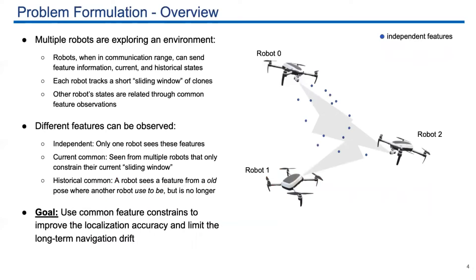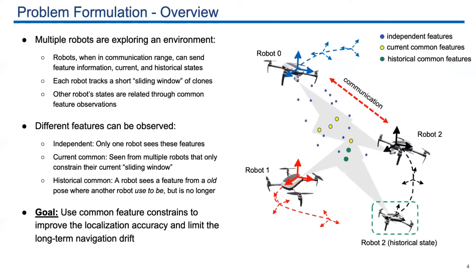When multiple robots explore the environment, if they have the ability of communication, they can exchange information. In this paper, we build a sliding window estimator. For each robot, we define different kinds of features. The first is independent features. These are features that can only be seen from one robot. The second one is current common features. These are features that can be seen by more than one robot at the current sliding window. And the third one is historical common features.